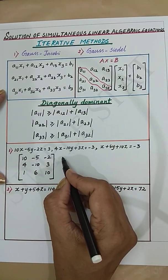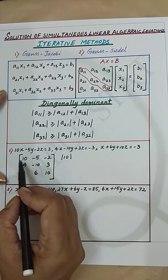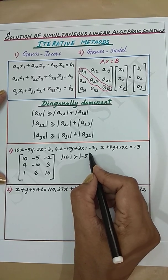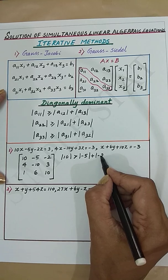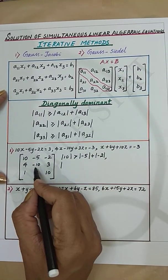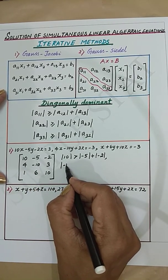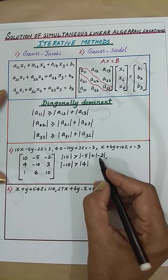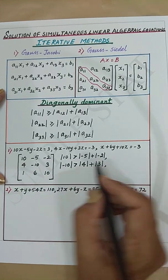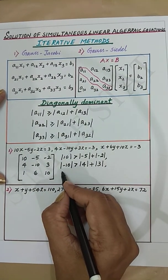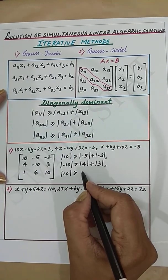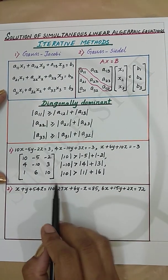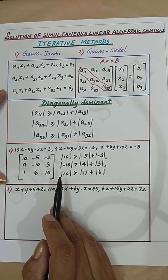Here A11 is 10, so modulus of 10 is greater than modulus of -5 plus modulus of -2. And A22 is -10, so modulus of -10 is greater than modulus of 4 plus modulus of 3. And for A33, modulus of 10 is greater than modulus of 1 plus modulus of 6. Hence, it is a diagonally dominant matrix and therefore iterative methods can be applied.